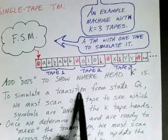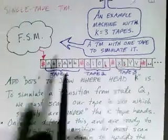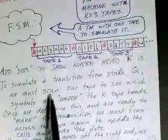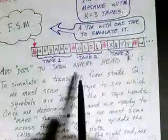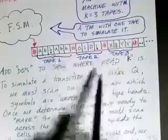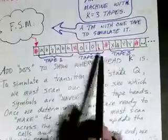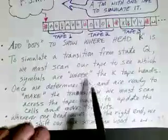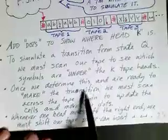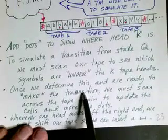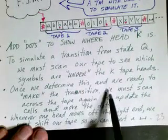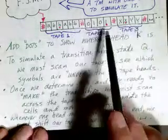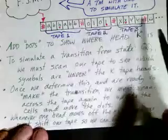To simulate a transition from some state Q in our multi-tape machine, we have to scan our tape to figure out where the tape heads are and what symbols are underneath the various tape heads. That's going to be kind of complicated. But once we determine this, we're ready to make the transition in the multi-tape machine. And then again, we must scan across the tape to update the cells and move the dots.